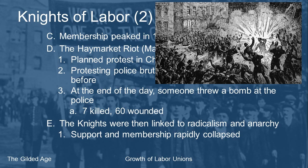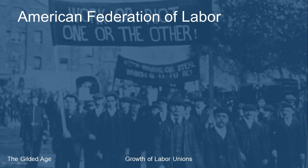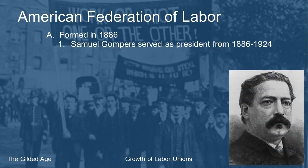Stepping in for the collapsing Knights of Labor was the American Federation of Labor — the AFL. Officially the AFL formed in 1886, though a predecessor organization had existed as early as 1881. The president of the AFL was Samuel Gompers, who served from 1886 until his death in 1924, with only a one-year exception.